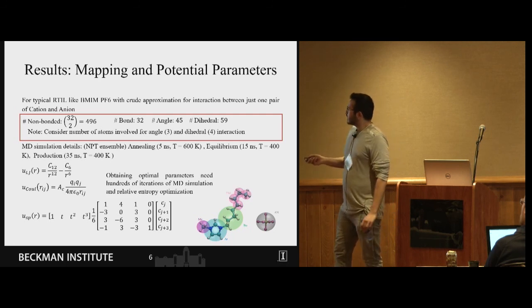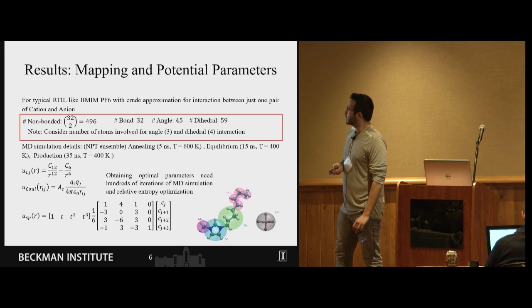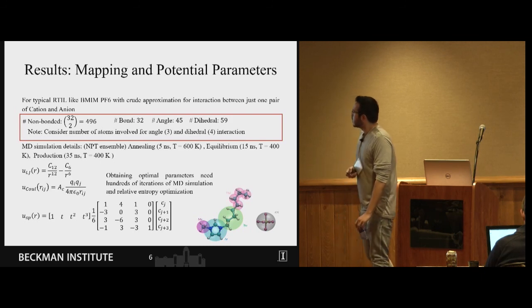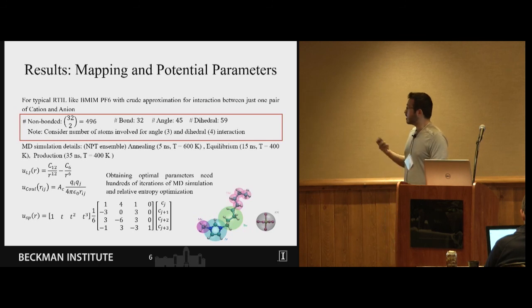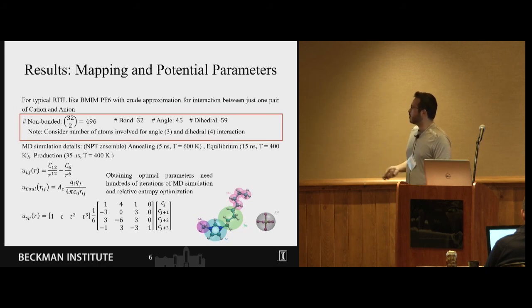We consider two types of interaction, one is standard Lennard-Jones interaction and the second one was a spline potential form which has more parameters. When we are doing coarse-graining we have to use more complex potential form in order to represent the same system with reduced degrees of freedom.